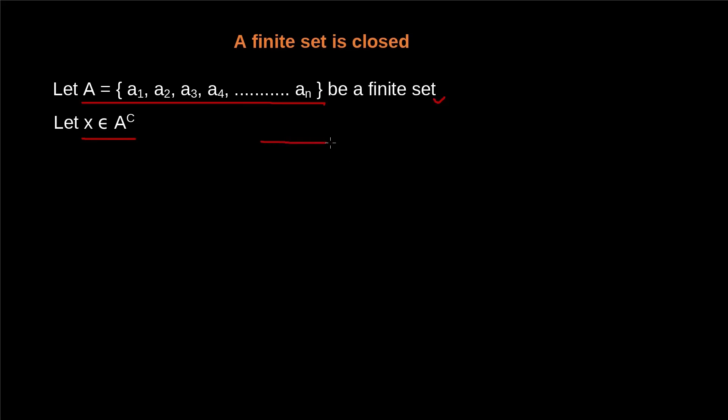So here we have this set A with its points a₁, a₂, a₃ up to aₙ and it should be noted that this is not an interval but just these points a₁, a₂, a₃ up to aₙ. So these are the points of this set A. And we have supposed that X belongs to A complement. So let's suppose X belongs here, which is outside of A.